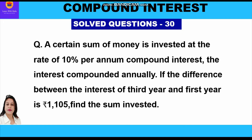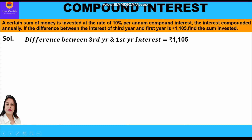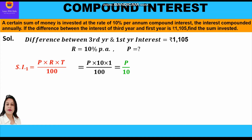We have to find the sum invested, that is we have to find the principal. The difference between third year and first year interest is rupees 1105, rate of interest is 10 percent per annum compounded annually. Using the simple interest formula SI = P × R × T / 100 for the first year: P × 10 × 1 / 100, which gives us P/10.